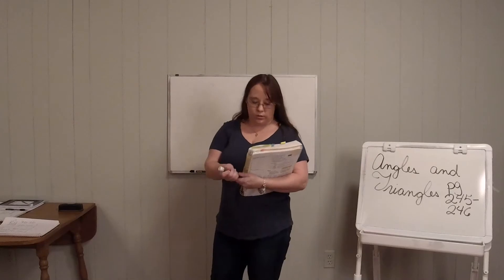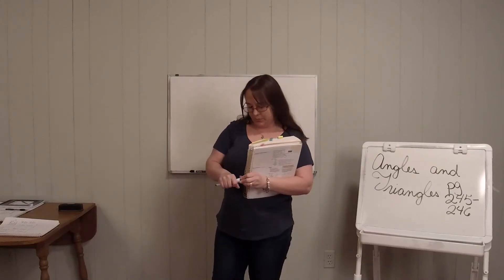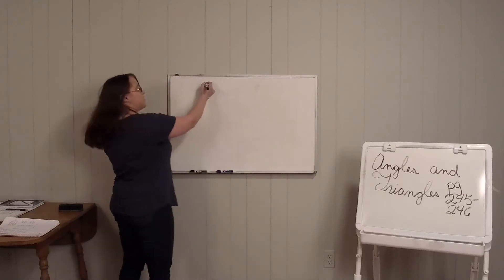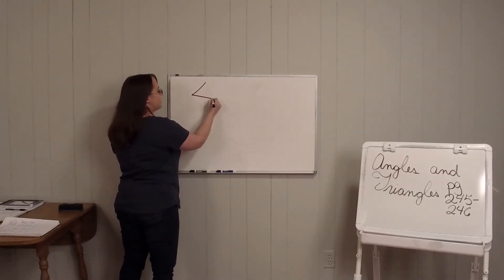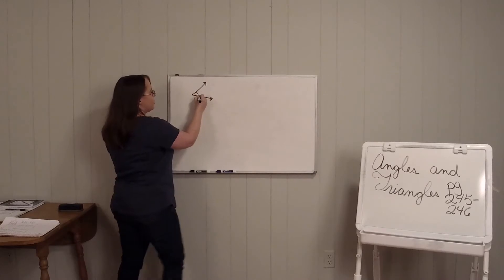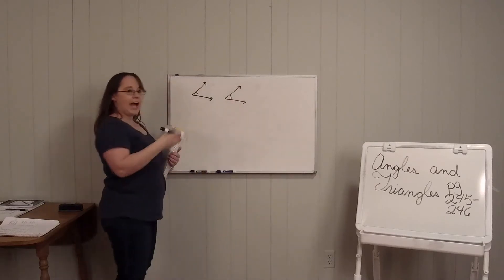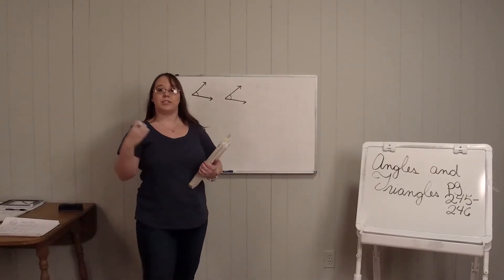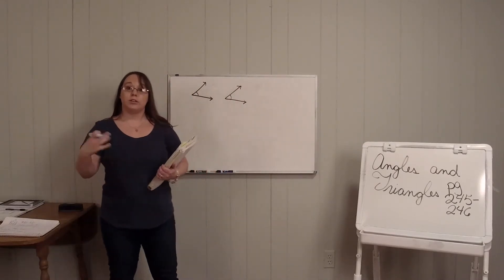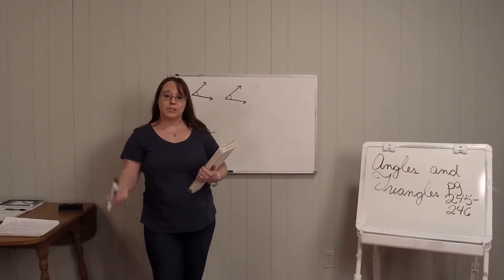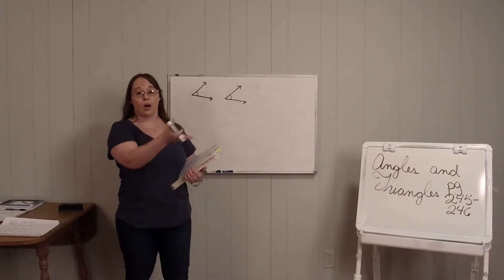So angles — sometimes they can be exactly the same. Kind of like when we talked about shapes and being congruent, you can have congruent angles. Because they're the exact same angle. So just like when we talked about geometry and you had congruent shapes, you can have congruent angles also.